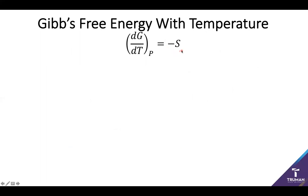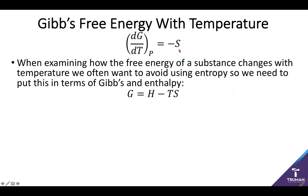We know that the temperature dependence of free energy is going to depend on entropy. However, using entropy as a measure is a little bit inconvenient, so instead we can make use of enthalpy and free energy. We can rephrase this expression: we know that the Gibbs free energy equals enthalpy minus temperature times entropy, so we solve in terms of negative entropy — subtracting enthalpy from both sides and dividing by T — and we now have a new expression for negative entropy. And negative entropy is the same as the free energy dependence with temperature, dG/dT.